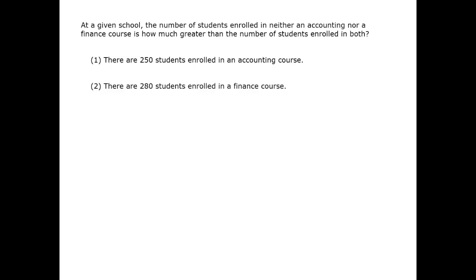In this question, a situation is described with two logical categories. We have people who are enrolled in an accounting course and those enrolled in a finance course. Those categories may overlap. A situation like this where we have to keep track of multiple statuses or different types of categories would be perfect for a table. However, this is a particular special case on the GMAT where we are dealing with overlapping sets, or what many people would think of as a Venn diagram question, where you can draw the circles corresponding to these two groups and see the area where they overlap.